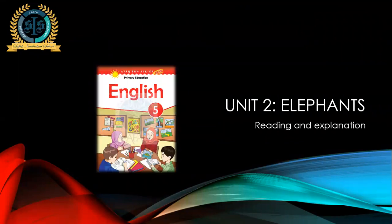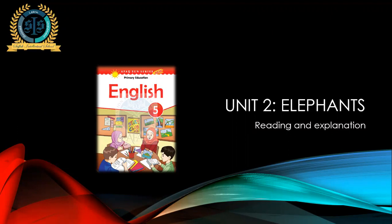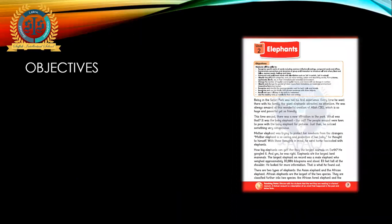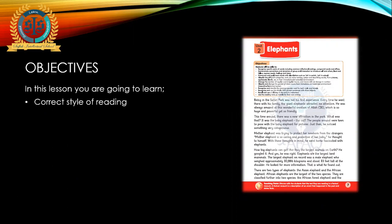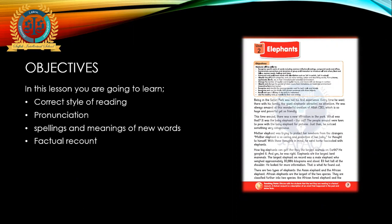This is the title of your book which we are going to read today. Unit number 2: Elephants. We are about to read about some elephants. The objectives of this lesson are to learn the correct style of reading, pronunciation, spelling the meanings of new words which I will provide to you, and a new terminology that is called factual recount.